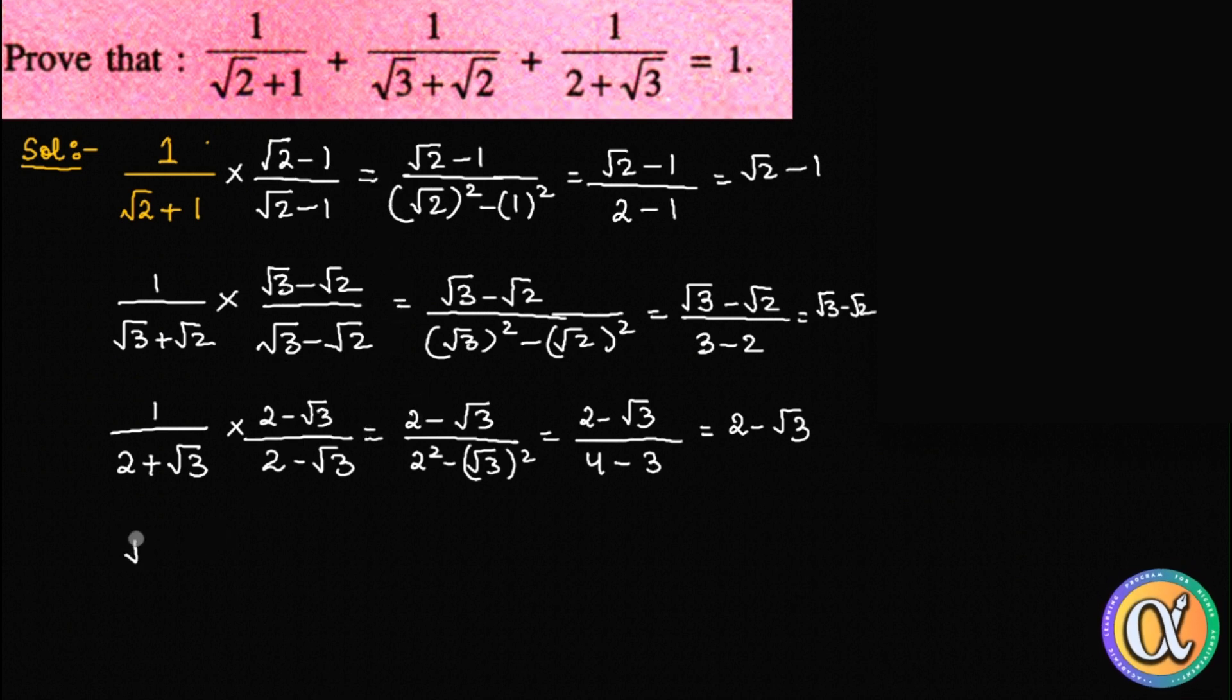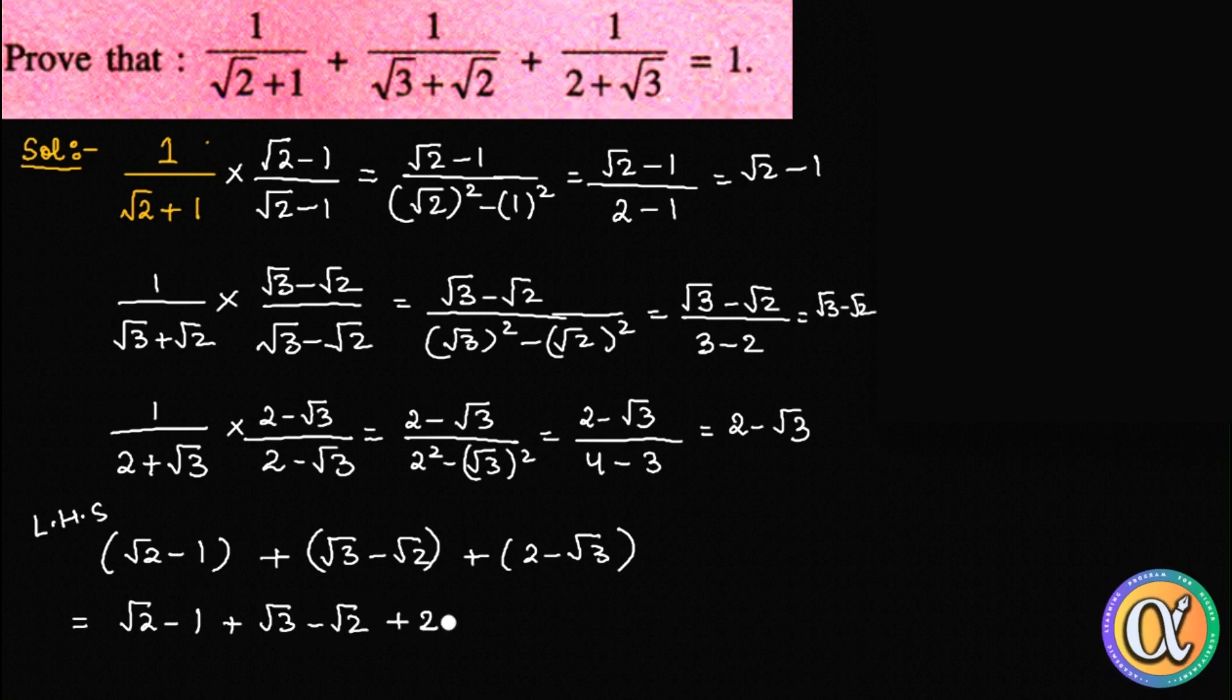Now finally we add the three terms. This is your LHS. Since here we have a plus sign, there is less reason to worry. If we had a minus sign then we need to be extra careful. So with the plus sign, we can just open the bracket. Try to simplify: plus root 3 minus root 3 gets cancelled, root 2 and root 2 cancels, plus root 2 and minus root 2 gets cancelled. Minus 1 plus 2 is equal to 1, and this is equal to our RHS.